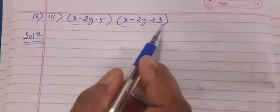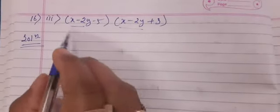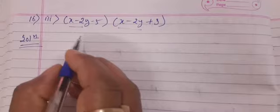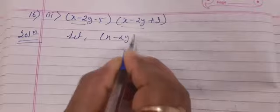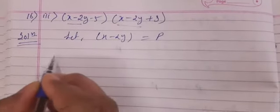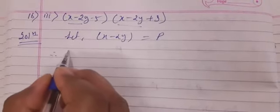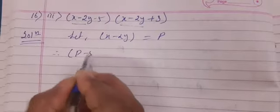So we'll consider first two terms as P. Let x minus 2y equals P, so therefore what will our equation be? Our equation will become (P - 5)(P + 3) because we have replaced x - 2y by P.